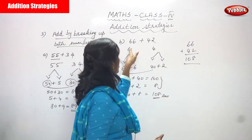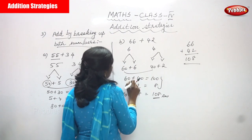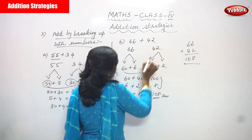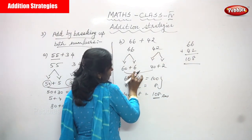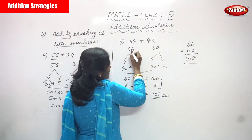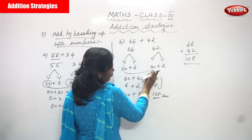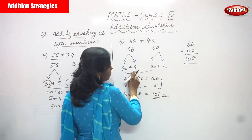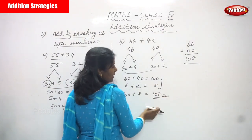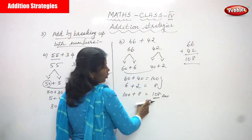Now we are going to do the same addition strategy — add by breaking up both numbers — for the second example: 66 plus 42. We split 66 as 60 plus 6, and 42 as 40 plus 2. Adding the tens first: 60 plus 40 equals 100. Adding the ones: 6 plus 2 equals 8. Combining: 100 plus 8 equals 108.